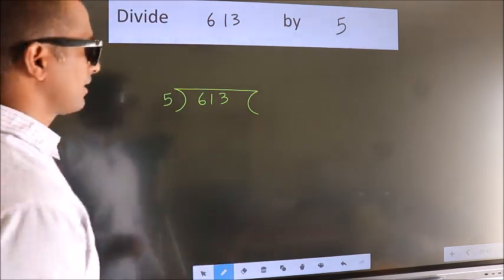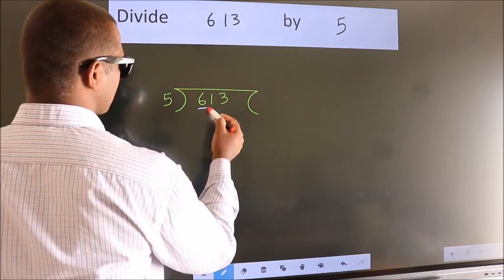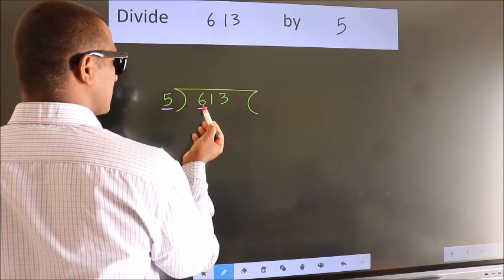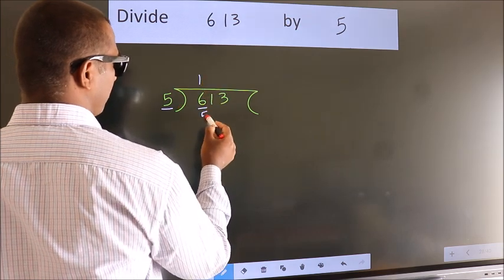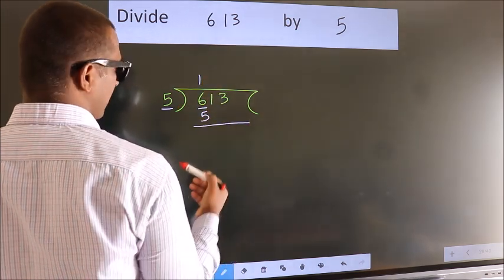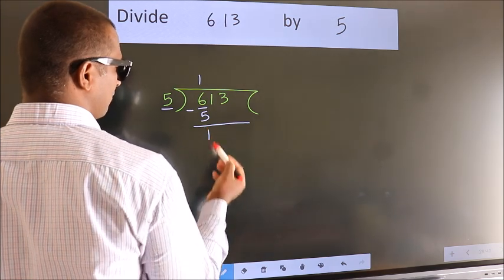Next. Here we have 6, here 5. A number close to 6 in the 5 table is 1 times 5. Now we should subtract. We get 1.